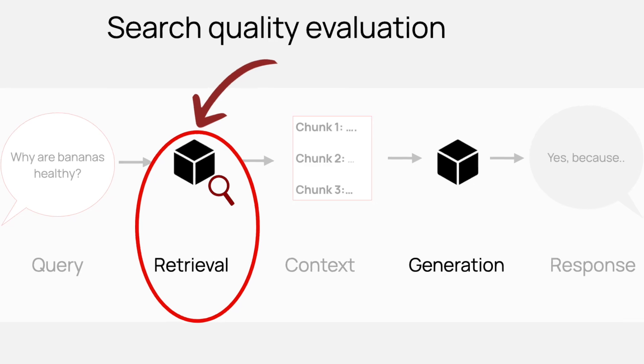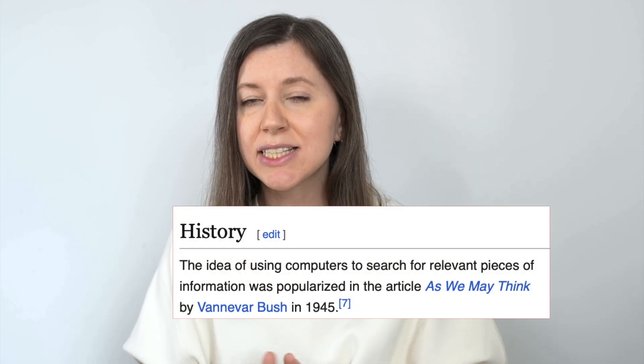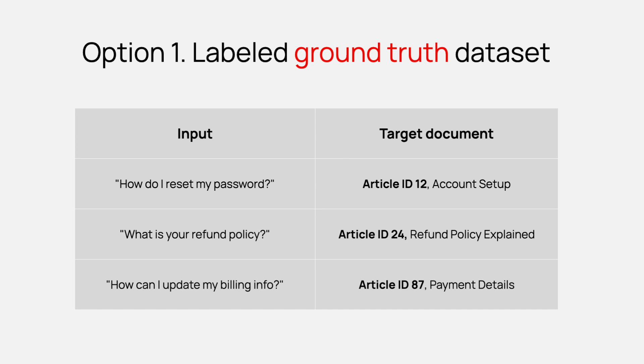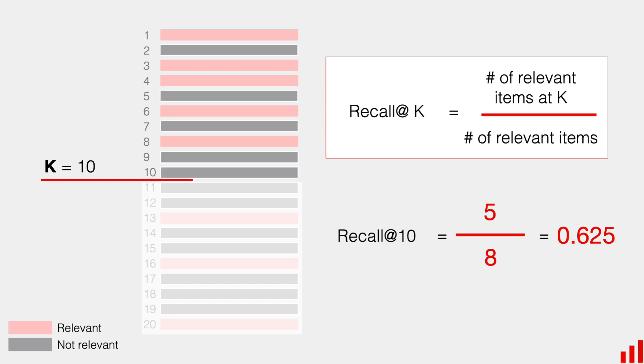Let's start with the search evaluation. This is not a new problem. Information retrieval has been around for decades and there are standard approaches to how you evaluate search results. To do that you typically create a ground truth dataset — for each query you provide a set of documents that contain the answers, and then you test if you can actually find them using metrics like precision at K or recall at K. Once you have such a dataset it is very reusable, so you can run evaluations without any additional costs or setup.